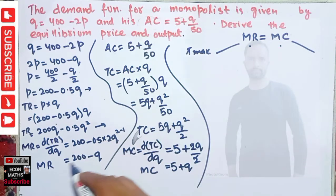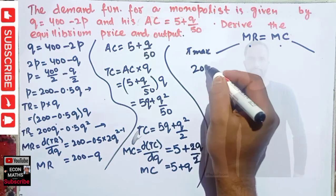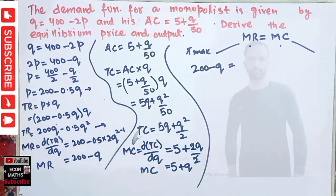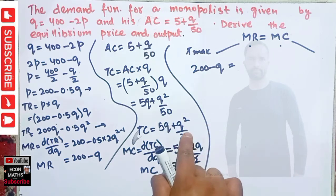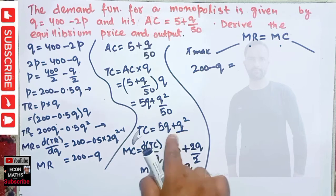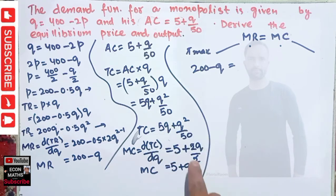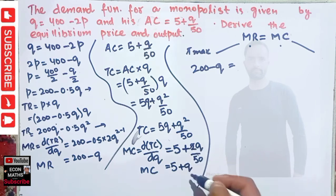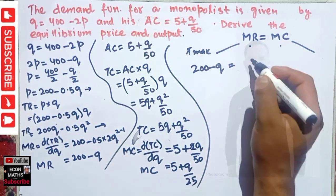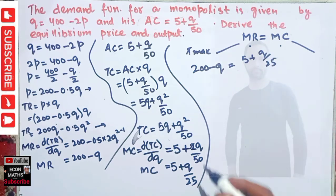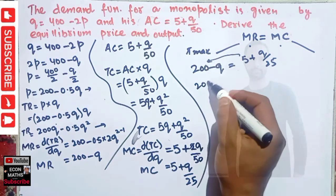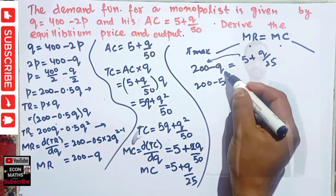For profit maximization, marginal revenue equals marginal cost. So: 200 − Q = 5 + Q/25. Transposing, 200 − 5 = Q/25 + Q, which gives 195 = Q/25 + Q.